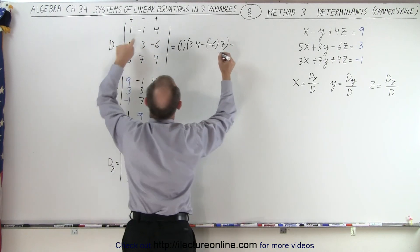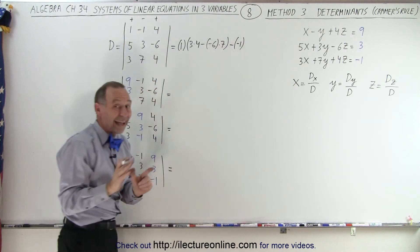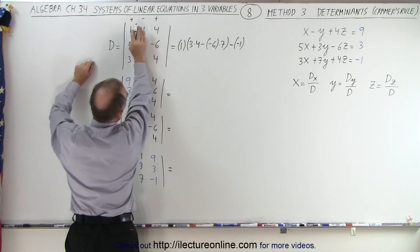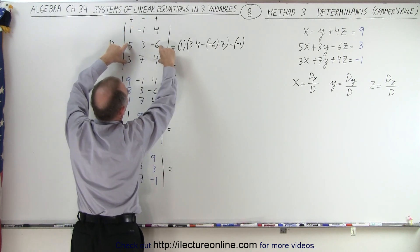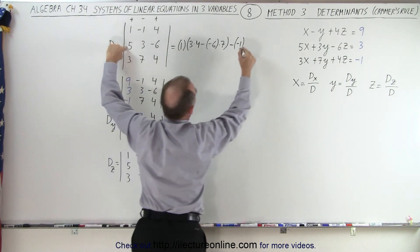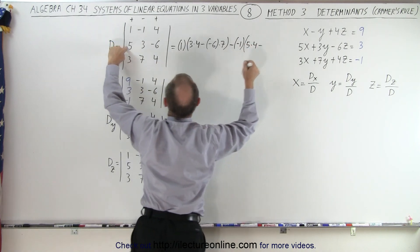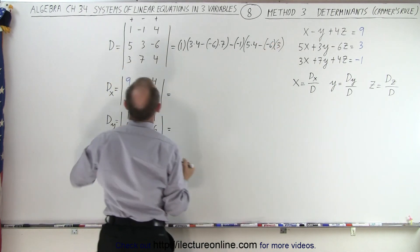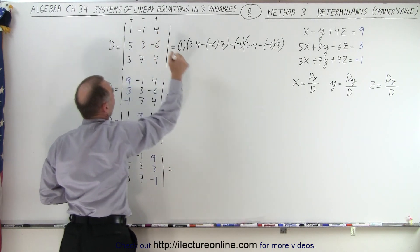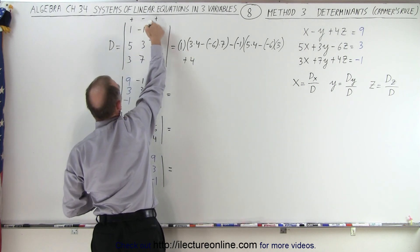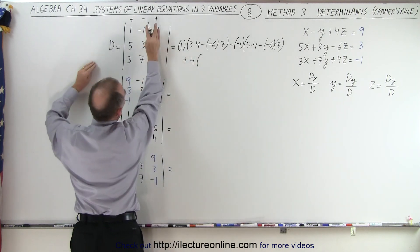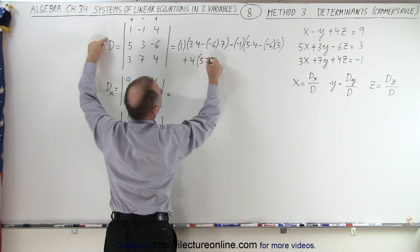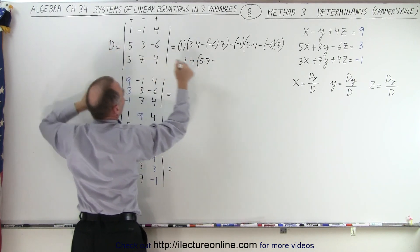Then we go minus the middle number, which is negative 1 — make sure you get the signs correct, that's very important. We multiply that times the sub-determinant formed by covering this column and this row, leaving those four numbers. So it's 5 times 4, minus the product of negative 6 times 3. And finally, we take the third number, the 4, so that will be plus 4 — because it's plus, minus, plus — times the remaining four numbers: 5 times 7 minus the product of 3 times 3.